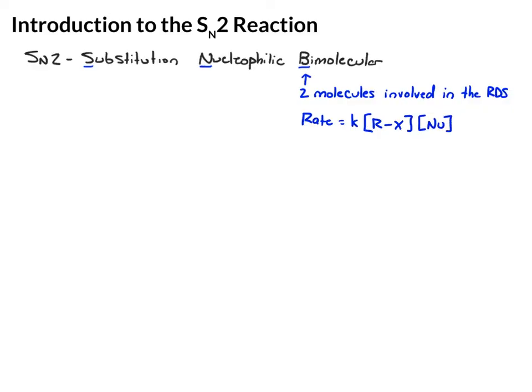Those are our two components. And the thing is, if you increase the concentration of either of these, you'll increase the rate of the reaction. So that means if you double the concentration of nucleophile, then you'll double the rate of the reaction. Bimolecular means two things involved here.